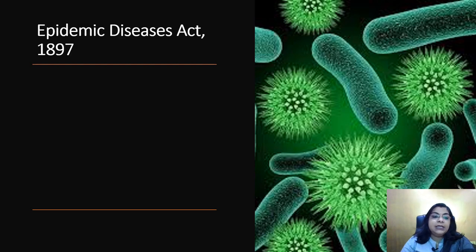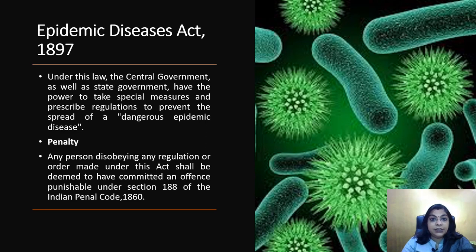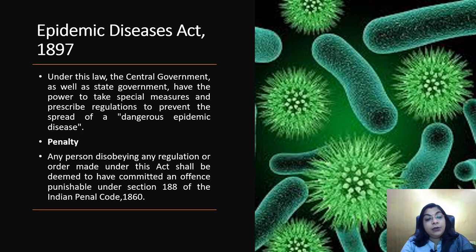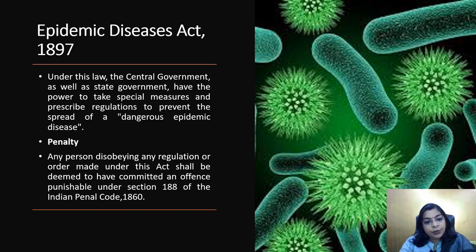Secondly, the Epidemic Disease Act 1897 states that the Central Government as well as the State Government have the power to take special measures and prescribe regulations to prevent the spread of a dangerous epidemic disease. If any person is violating this, there is a penalty — disobeying any regulation or order made under this Act shall be deemed to have committed an offence punishable under Section 188 of the Indian Penal Code 1860. That means even violations of this Act — beyond Section 144 of CRPC — will also be punished under Section 188 of the Indian Penal Code 1860.